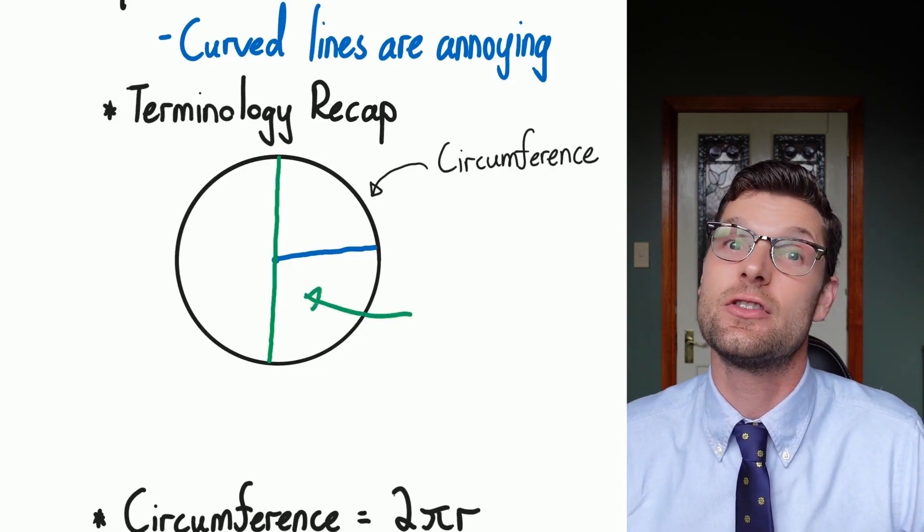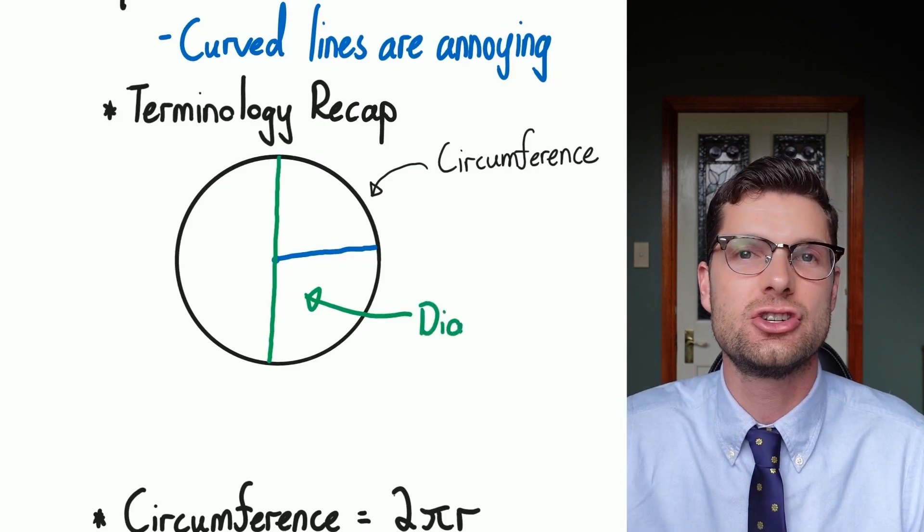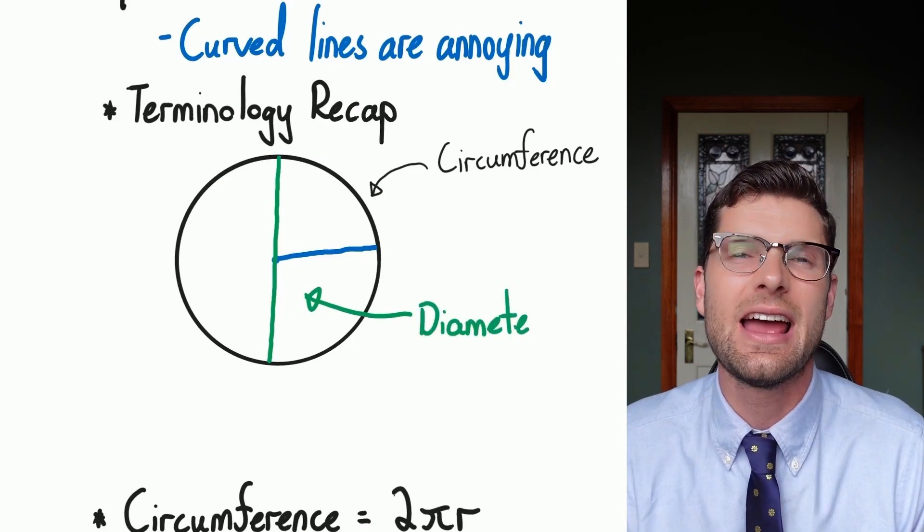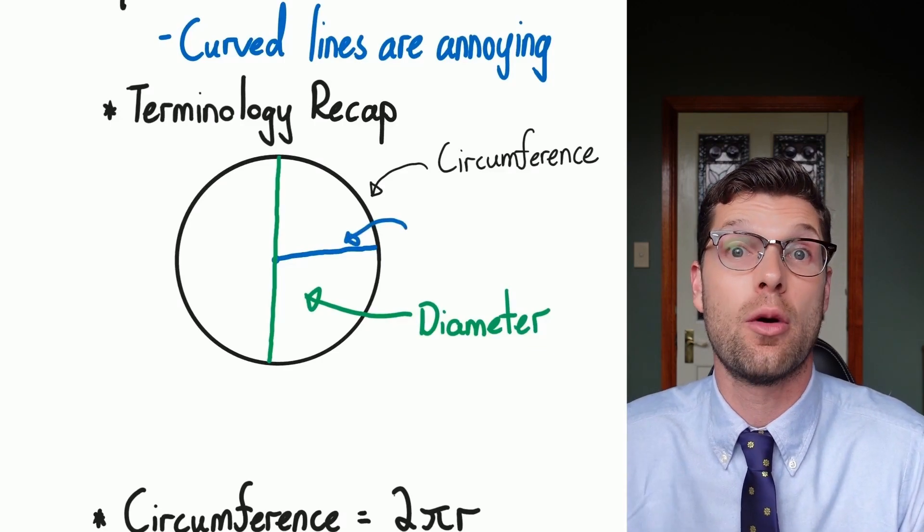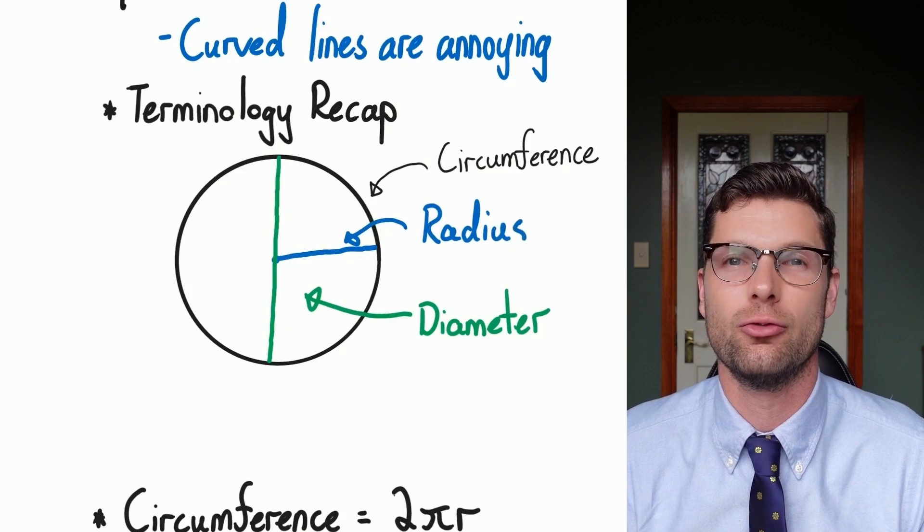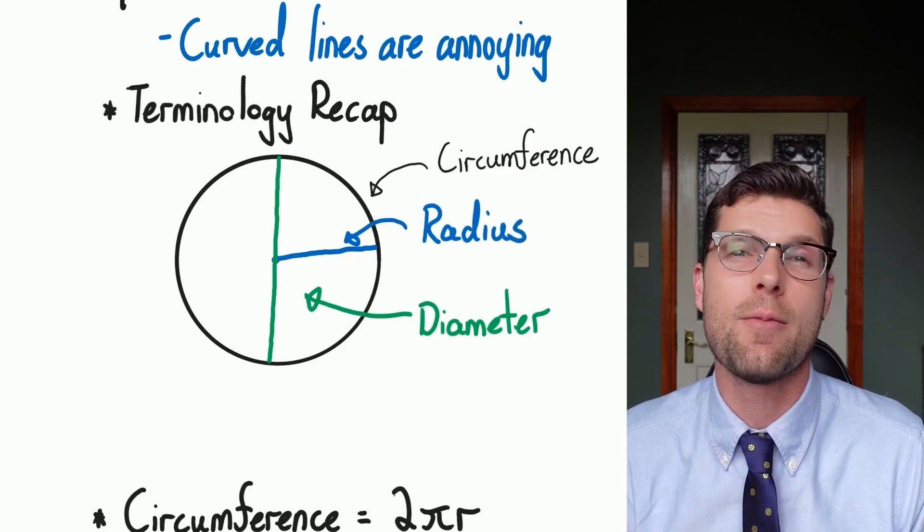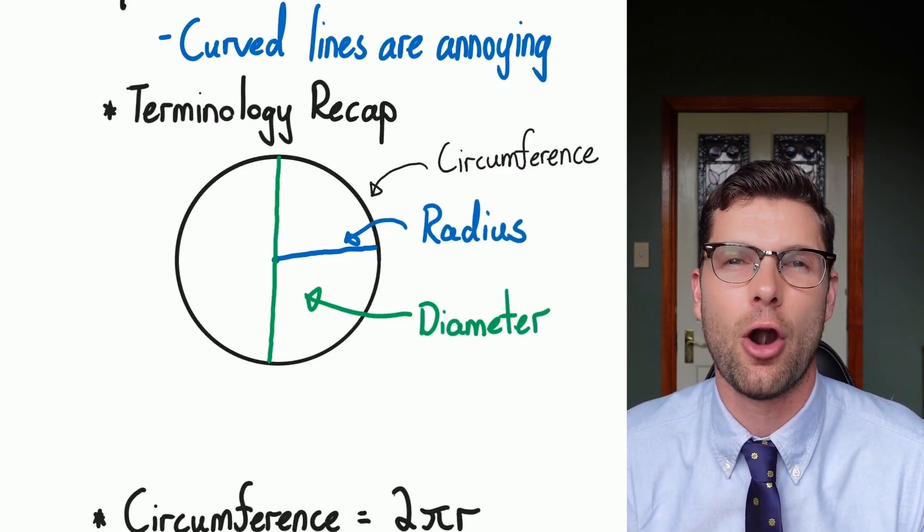The green line there, the straight line distance from one edge to the other going through the middle is called the diameter, and then half the diameter which is from the middle out to a point on the circle's edge is called the radius, and the radius is where most of our work is going to come from.